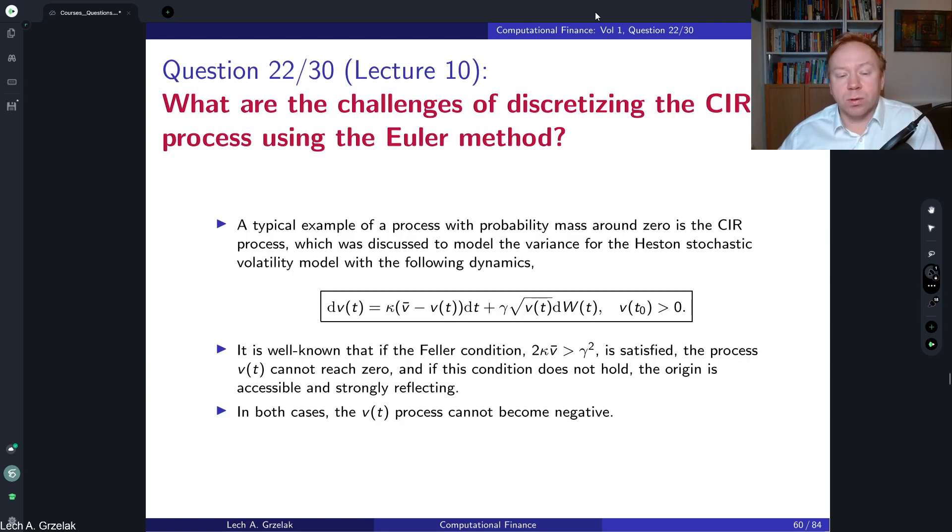The CIR process, so the process that we can see here on the slide, is a very popular process, especially because it's used in the dynamics of the Heston model. It is a non-negative process, so we start with the initial variance which is bigger than zero.